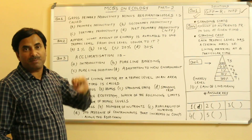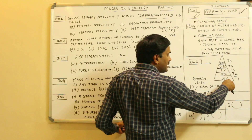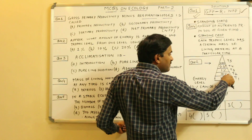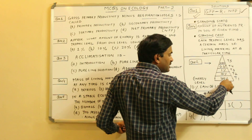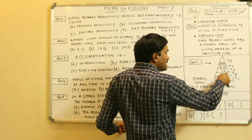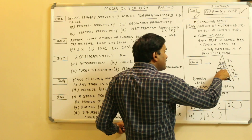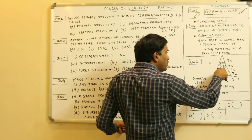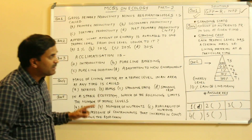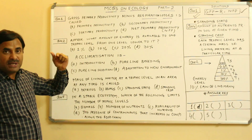For example, if trophic level T1 has 100% energy, only 10% moves to the next trophic level. Then 10% of that 10% is 1%, then 10% of 1% is 0.1%, and then 0.01%. So Lindeman's 10% law is applicable: from each trophic level, only 10% of the energy is transferred upward.